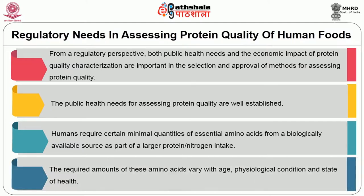The required amounts of these amino acids vary with age, physiological condition, and state of health. For example, an infant or child in the growing period requires more quantity as well as quality of protein. Also, when a mother is pregnant or lactating, the physiological conditions are different from those of a normal healthy woman. Therefore, protein requirements are different for age, stage, and gender.